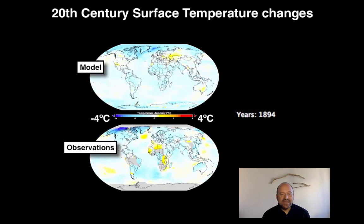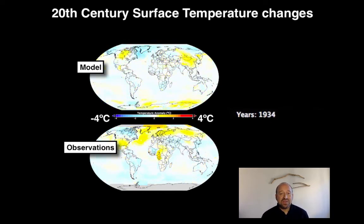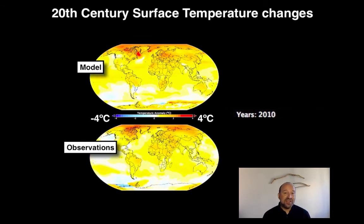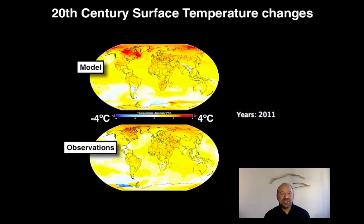We can also look at these results in a spatial context and compare them with model results. As you can see, the models and the observations don't match up in the early part — most of the variation there is unpredictable weather. But as we get towards the end of the 20th century, one starts to see the global warming pattern emerge both in the observations and in the models. This is a hindcast, and you can see that the models and the observations share the same fingerprint of change — particularly the warming over land more than the ocean, the warming in the north more than the south, and the warming in the Arctic most of all.